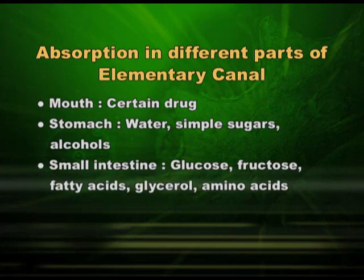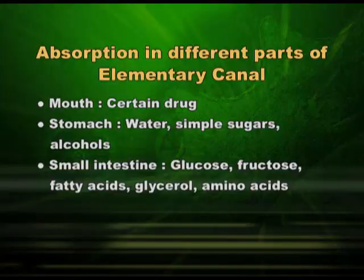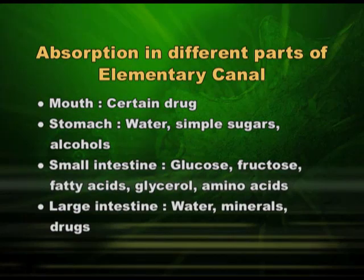Coming to small intestine. We know that the small intestine is the place where maximum absorption activities will take place. Glucose, fructose, fatty acids, glycerol, and amino acids are all absorbed here. Glucose and fructose are the end products of carbohydrates; fatty acids and glycerol are the end products of fats; and amino acids are the end products of proteins. All these main end products are absorbed in the small intestine. The surface area is too large and absorption is very efficient.